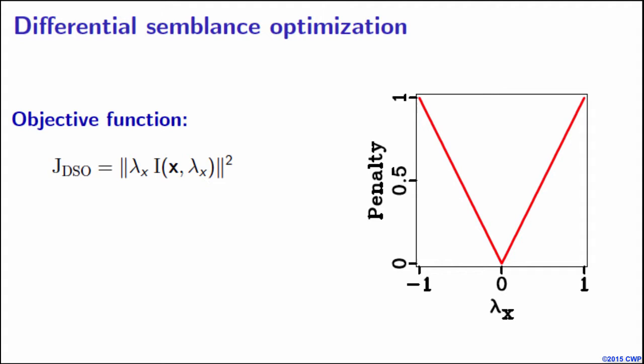Velocity model building is usually done iteratively with gradient-based minimization schemes. The most practical and efficient way to obtain the gradient is by applying the adjoint state theory, which was discussed in a number of presentations yesterday and today and also in the tutorial.